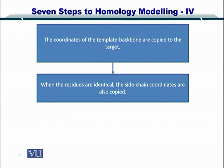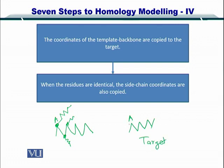Please note that when the residues are the same — that is, when the template sequence and the target sequence have, let's say, alanine at the same position — then you can also copy the side chain. For example, if your template had alanine with its own side chain, and the target also has alanine at that position in the sequence, then you can copy the side chain coordinates as well. However, if the target had lysine instead of alanine, the side chain would be different, so you would not copy it. Please remember: if the amino acid is the same at that position between target and template, you also copy the side chain.